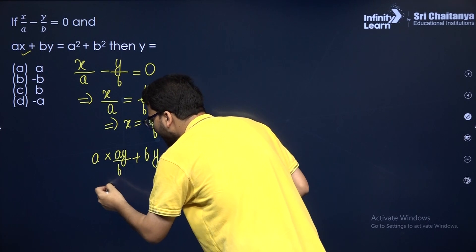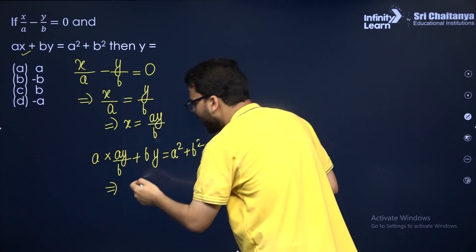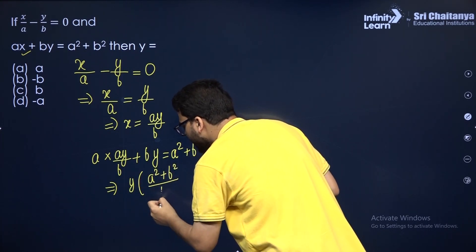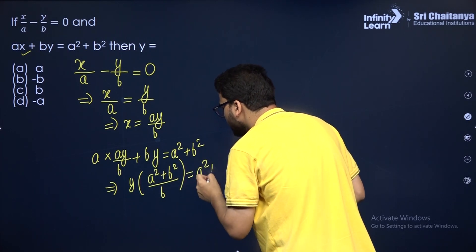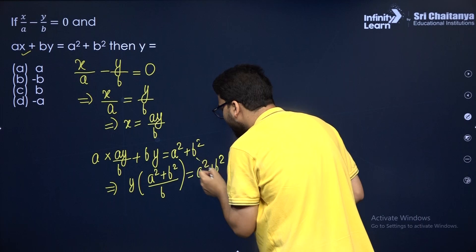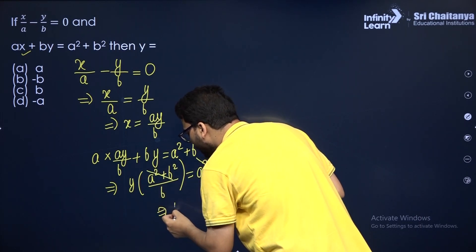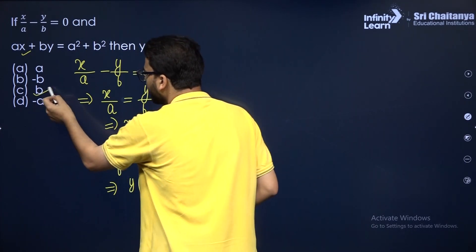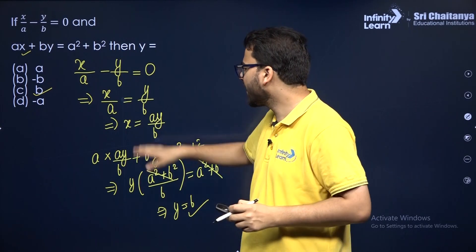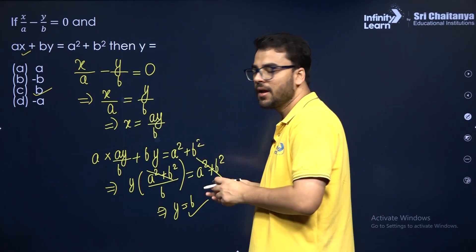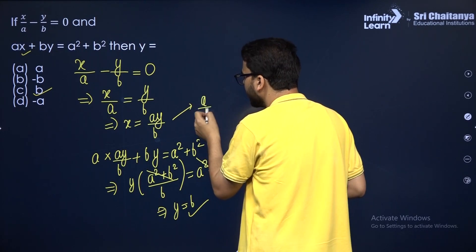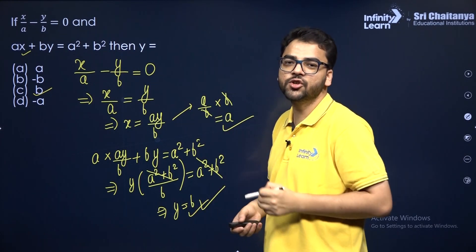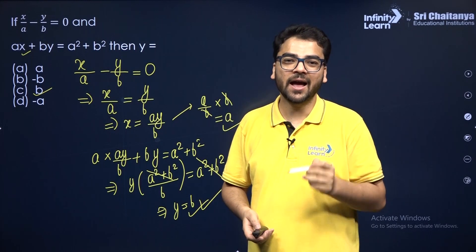Simplifying, if you take y as common, you get y times (a squared plus b squared) by b equals a squared plus b squared. Cancelling a squared plus b squared from both sides gives y equals b. Only y was asked, so there is no need to find x. Although you can verify: substituting y equals b back gives x equals a. So x equals a and y equals b is the solution. I hope it is clear.